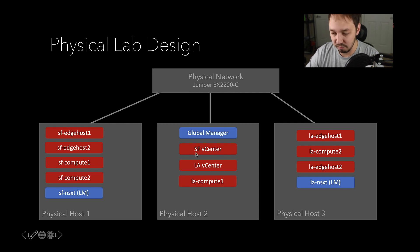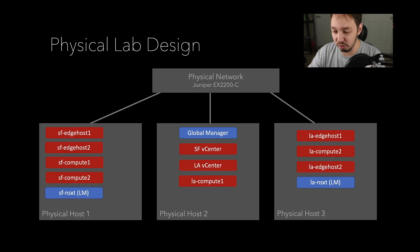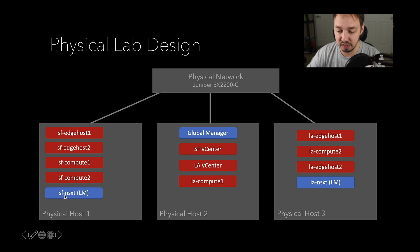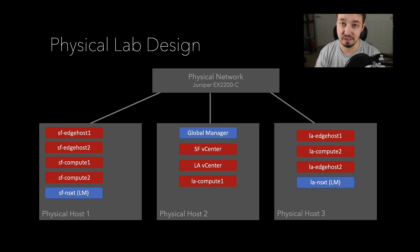Within each location I have vSphere hosts and a vCenter — San Francisco vCenter and Los Angeles vCenter. As far as the hosts go, I have two types: compute hosts, where my VMs will live for testing, and edge hosts, which are vSphere hosts for my edge nodes to live on. Everything in red is vSphere or vCenter. The stuff in blue is federation. The San Francisco NSX-T LM — which stands for local manager — is nothing more than a standard NSX-T manager, the same thing you'd deploy if you followed my NSX-T 3.0 from scratch series. Nothing different at all.